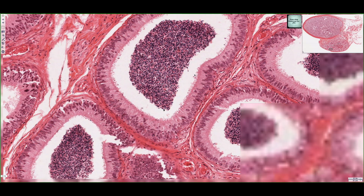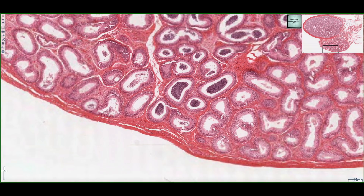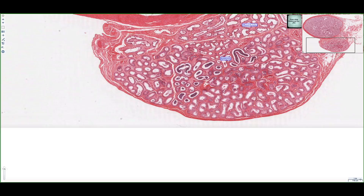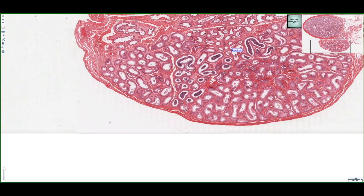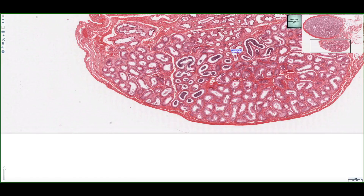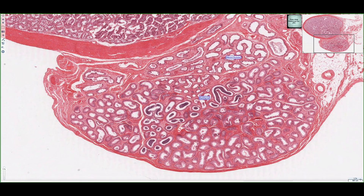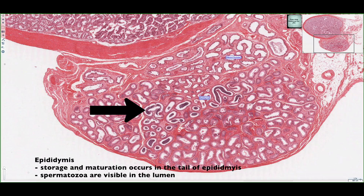Zooming out, we can see both regions clearly: the efferent ductules have a distinct scalloped appearance of their lumens, whereas the epididymis has a smooth pseudo-stratified columnar epithelium. Even in this gross view, we can see that the epididymis is where storage and maturation of sperm occurs. In conjunction with the autonomic nervous system, sperm are propelled through the vas deferens towards the ducts for seminal emission.